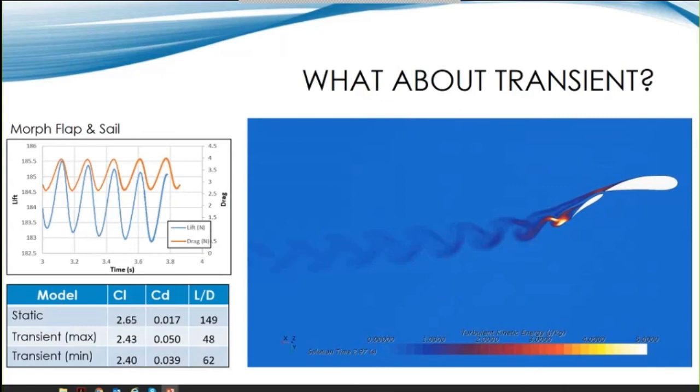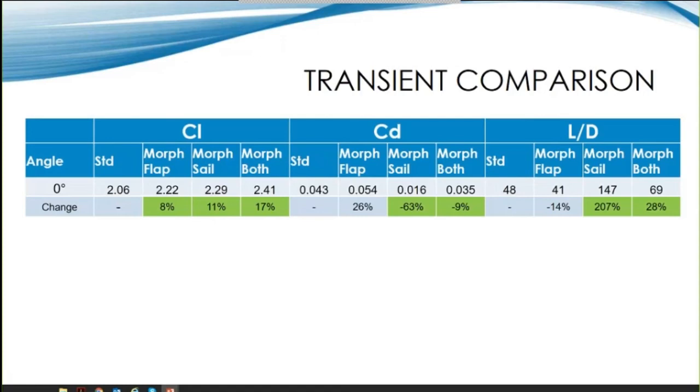So if we summarize the transient results, taking the lowest lift values, one key characteristic becomes clear - morphing the sails and flap provides a significant performance increase for the generated lift at a zero degree angle of attack. The effect on computed drag varies. However, overall there is a reduction in drag leading to better lift and lift over drag performance.